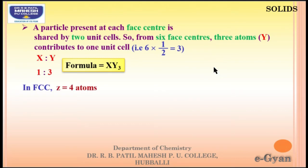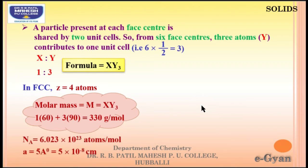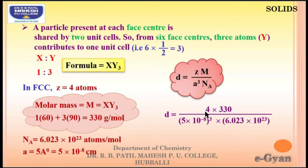In FCC, Z = 4. Atomic weights given are 60 for X and 90 for Y. Formula is XY₃, so total molecular mass = 60 + 3 × 90 = 330 g/mol. Edge length A = 5 Å = 5 × 10⁻⁸ cm. Density = Z × M / (A³ × Nₐ) = 4 × 330 / [(5 × 10⁻⁸)³ × 6.022 × 10²³]. On solving, we get 17.53 g/cm³.